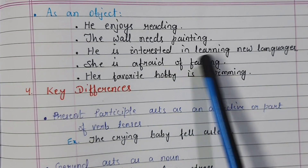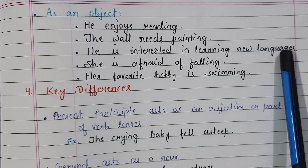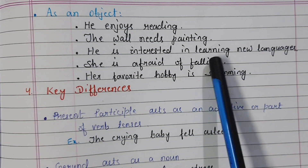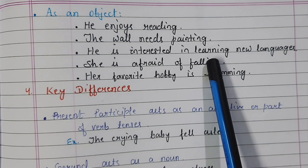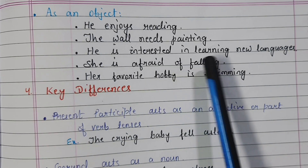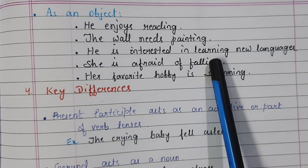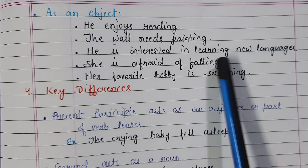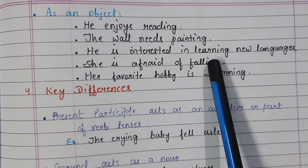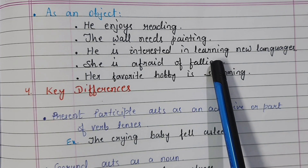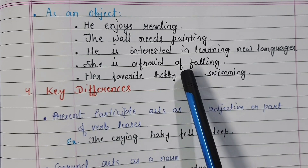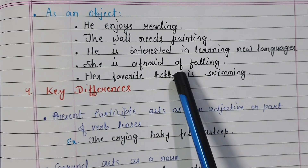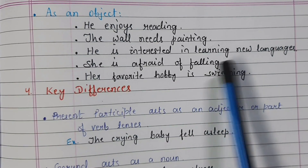'He is interested in learning new languages.' Learning is the object of the preposition 'in.' When the ing form of a verb is the object of a preposition, it acts as a noun — that is a gerund. So learning is a gerund. 'She is afraid of falling.' Of falling — falling is the object of the preposition 'of,' so falling is a gerund.